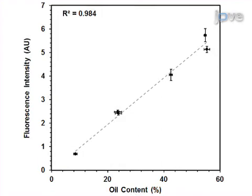Readings show a linear relationship between the neutral lipid content of the algal cells and the intensity of the fluorescence measurement. Conversion of fluorescence measurements to oil content can be achieved with a calibration curve, prepared with cells of known oil composition.